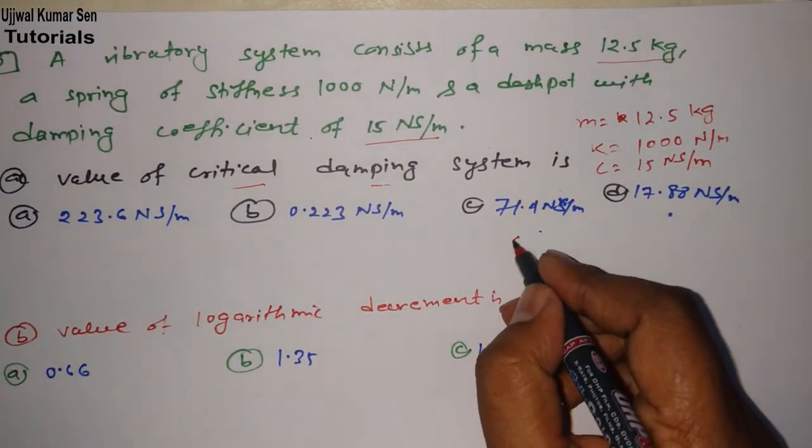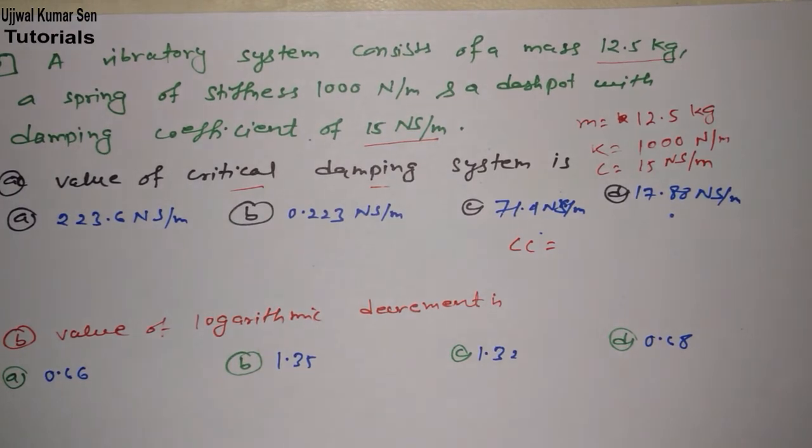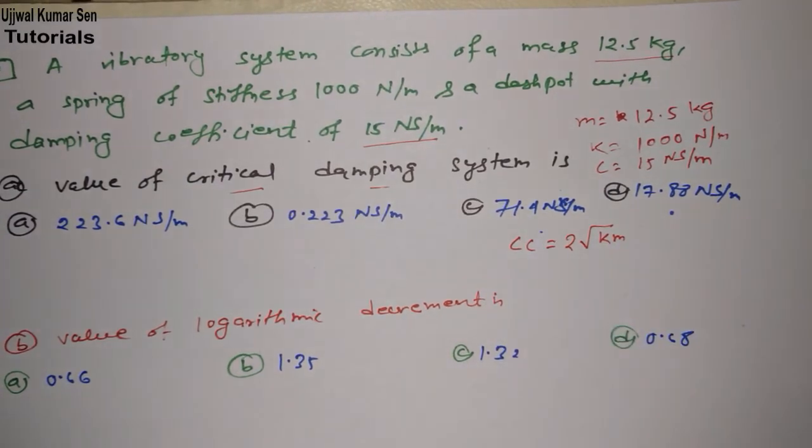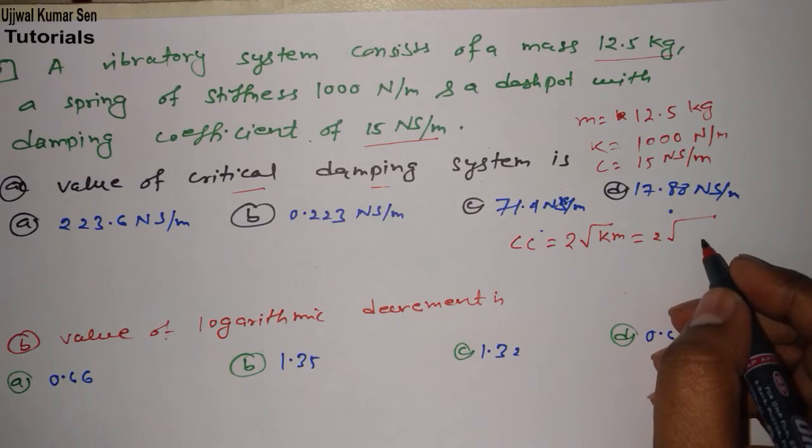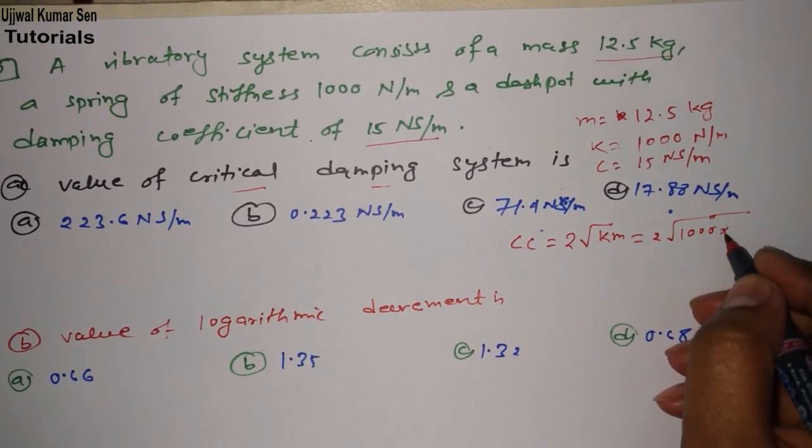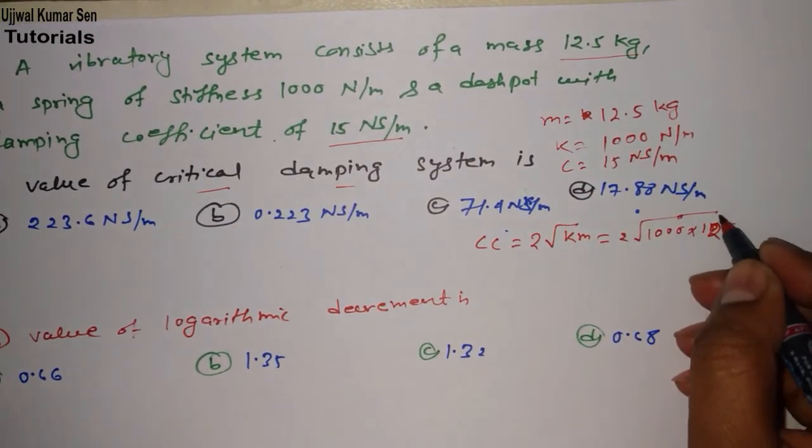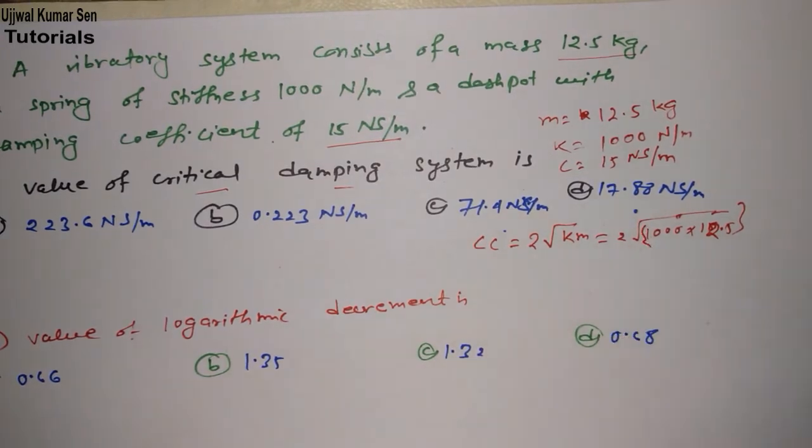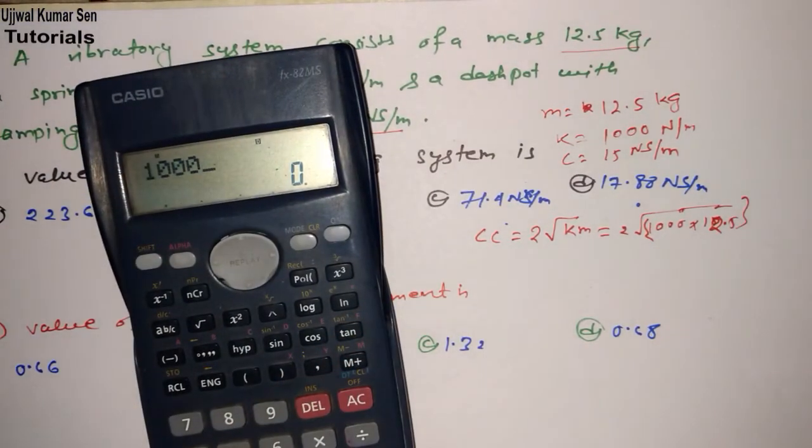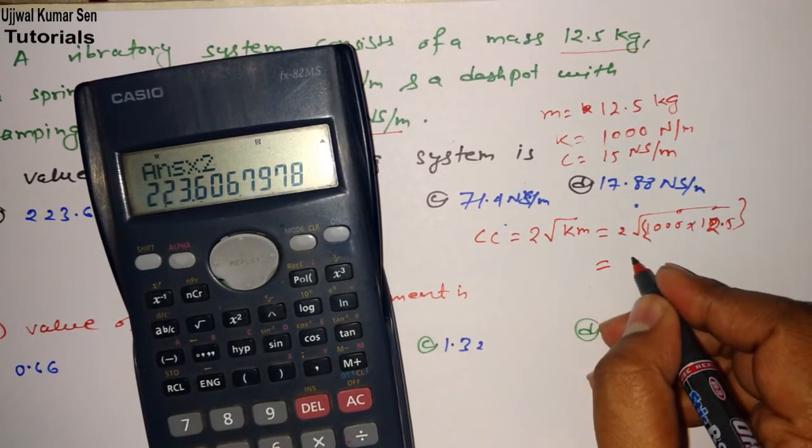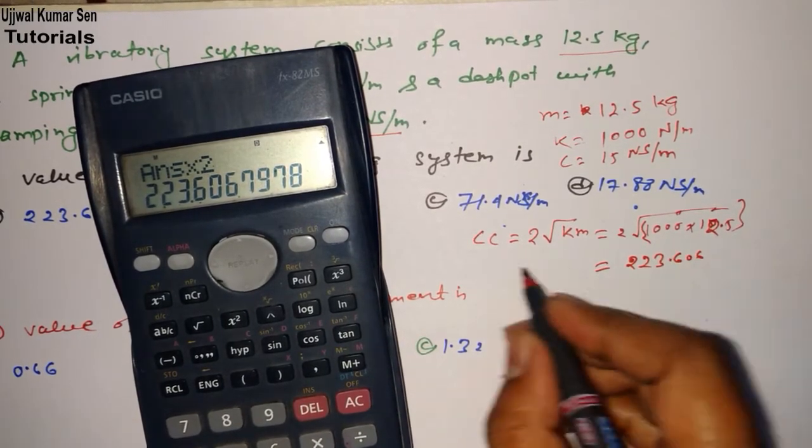Now what we have to find out: critical damping. That means cc we have to find out. The formula I have shared with you to find out cc is 2 root under km. So k is stiffness, that is 1000, and m is 12.5 kg. Now what I require? We require a calculator. So 1000 multiplied by 12.5, then divided by 2, multiplied by 2.